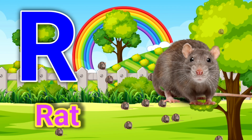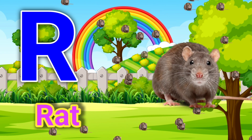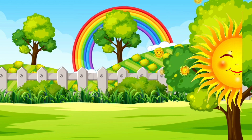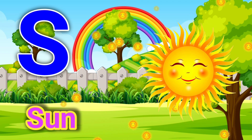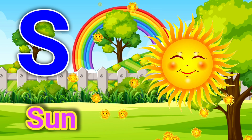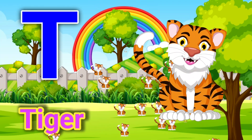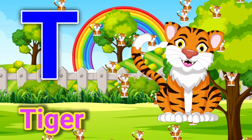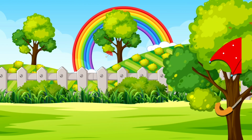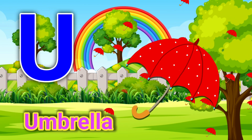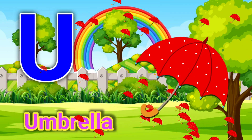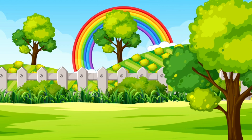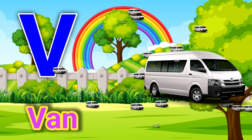R for red, S for sun, T for tiger, U for umbrella, E for umbrella, V for van.